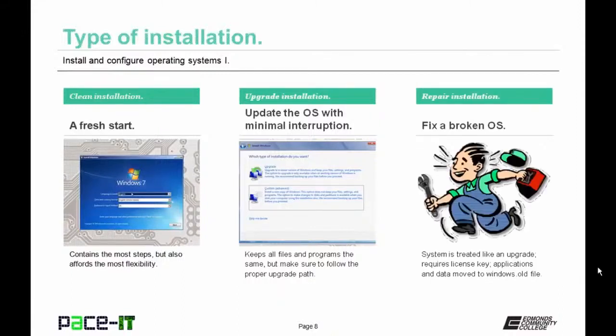Then we have the repair installation, used to fix a broken operating system. The system is treated like an upgrade and requires the license key as well. Applications and data are moved to the Windows.old file.